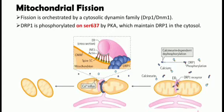This has been shown to occur at sites where the endoplasmic reticulum wraps around mitochondria. Here, DRP1 oligomerizes and induces GTP hydrolysis-mediated membrane constriction. The activity of DRP1 is supported by actin polymerization at the ER-mitochondrial interface, mediated by actin-nucleating proteins Inverted Formin 2 and Formin Binding Protein Spire1C.